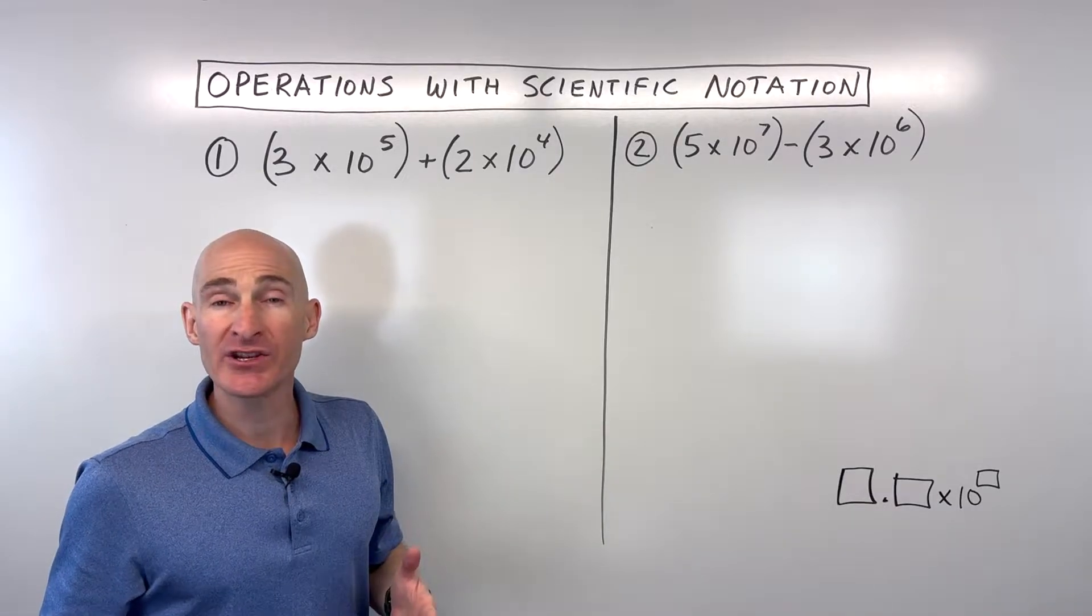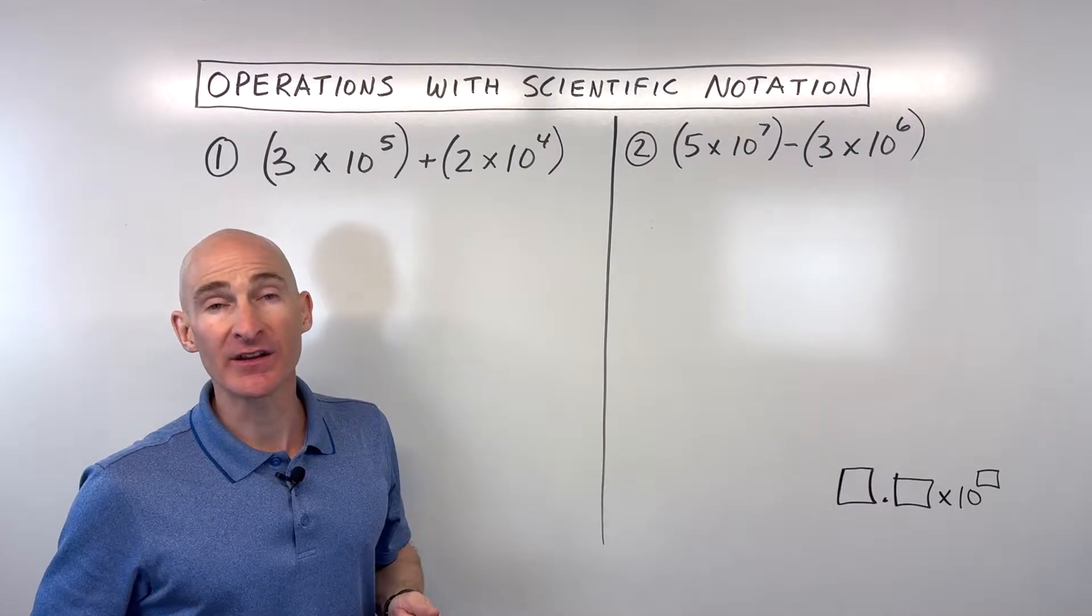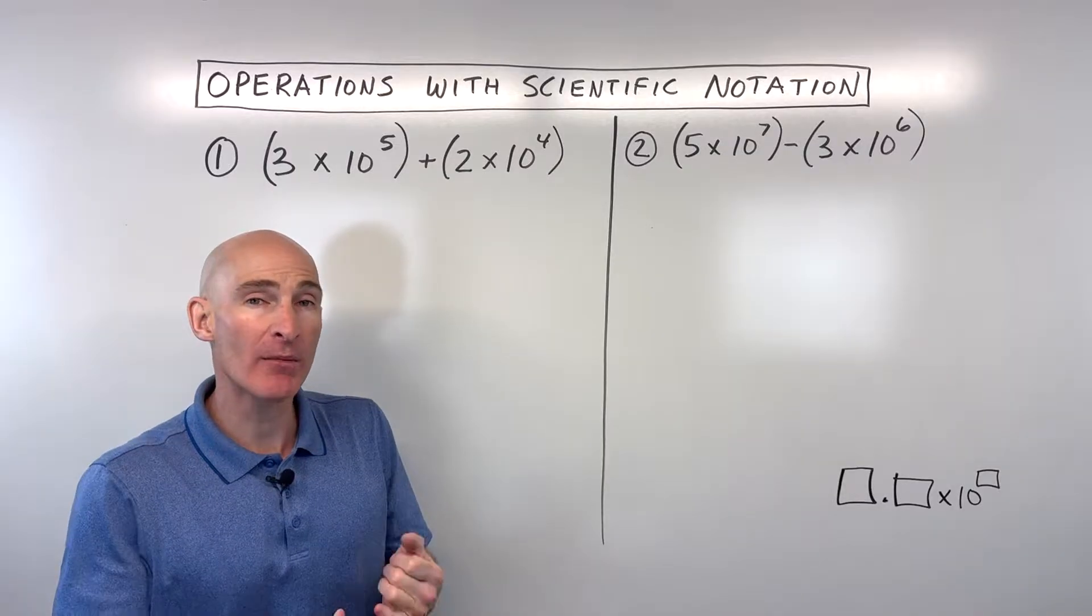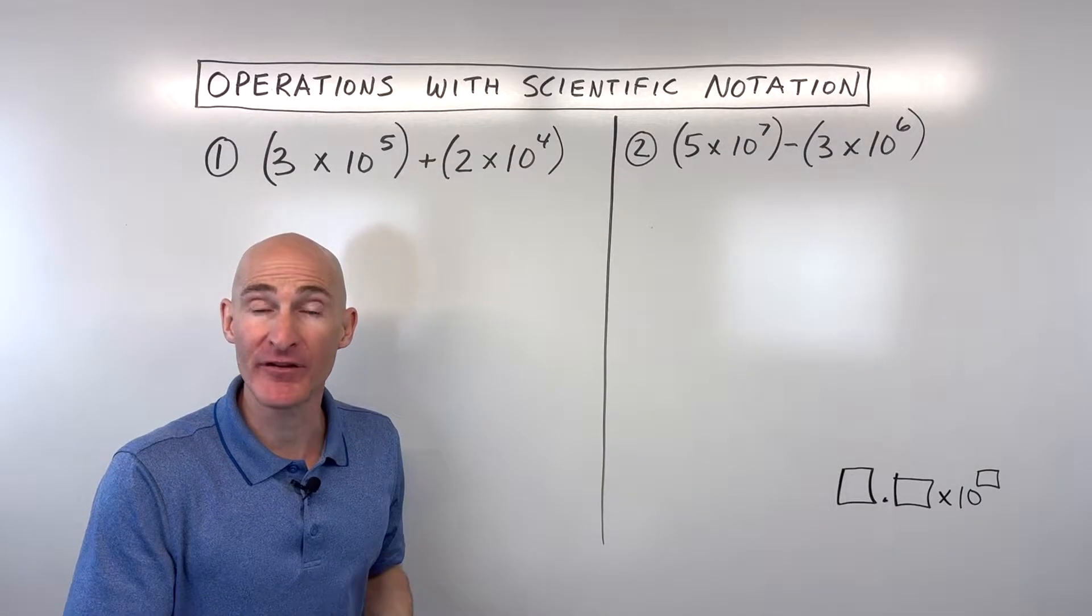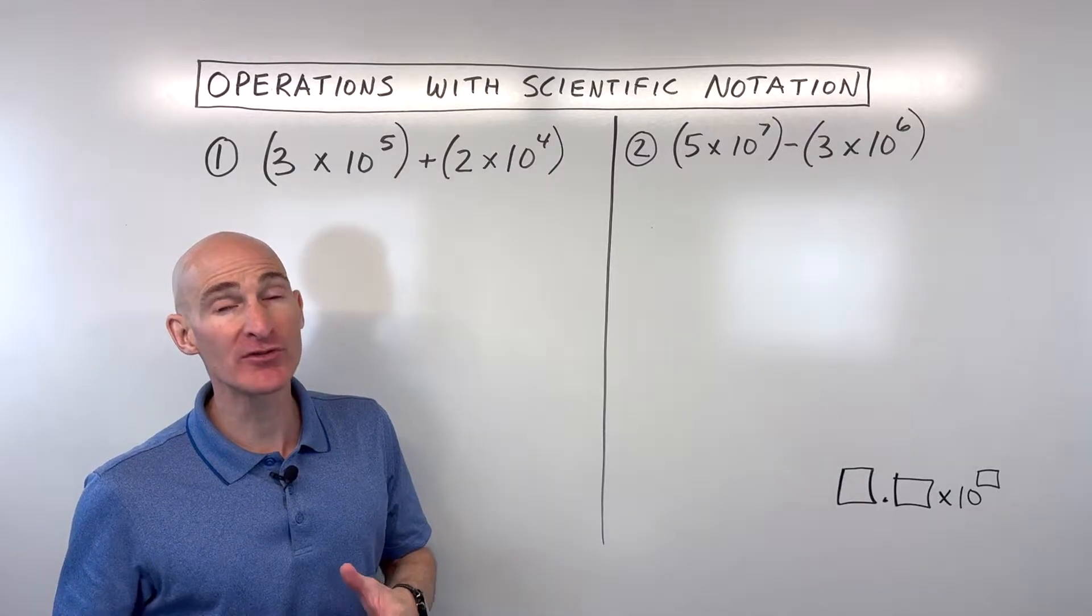In this video, you're going to learn how to do operations involving scientific notation numbers. We're going to talk about adding numbers that are in scientific notation, subtracting, multiplying, and dividing. We're going to go through four examples. Let's dive in.